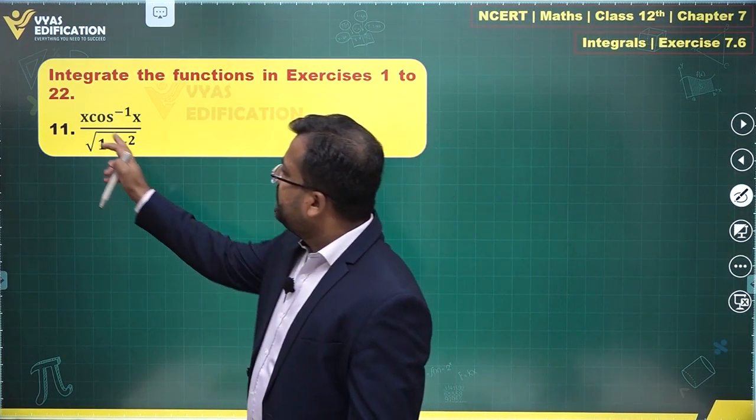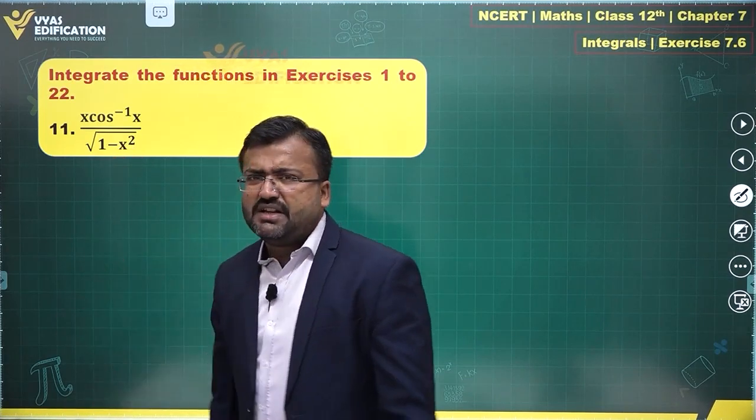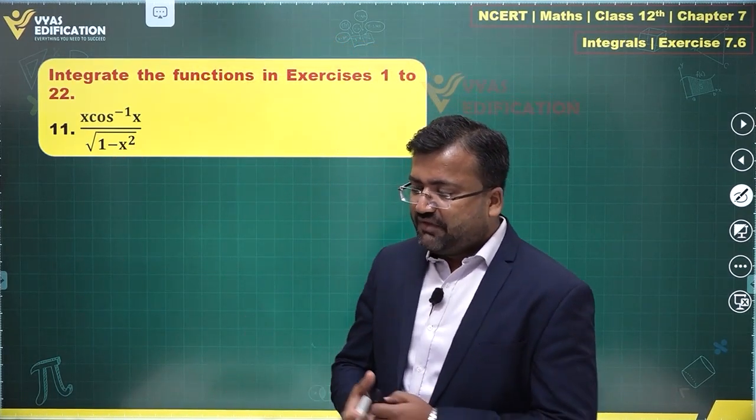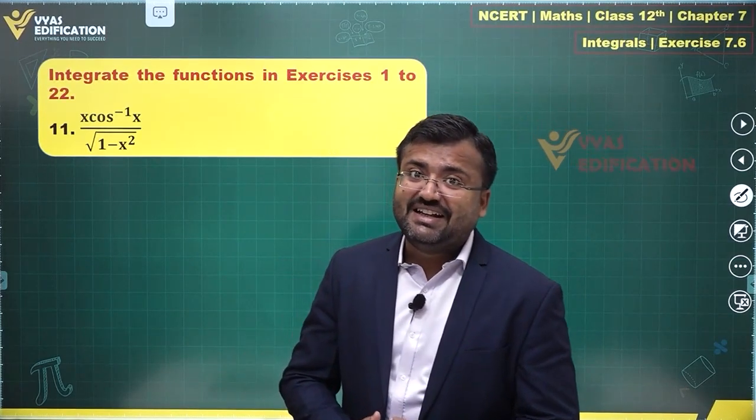So one of the ideas is if you observe this x upon under root of 1 minus x square, this is some function for which we can find the integral. If you go about finding the integral, we can find that integral easily.